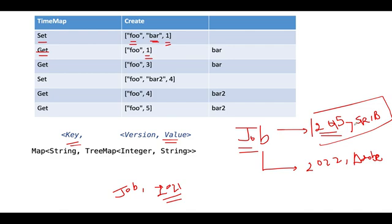What is that entry? That entry comes as 2015 comma SRIB, so I'll be returning SRIB over there as an answer. Had it been the case the version would have been 2022, in that case I would have returned Adobe as the answer. I would have retrieved this entry from my map and corresponding to this entry which company maps to 2022, it is Adobe.